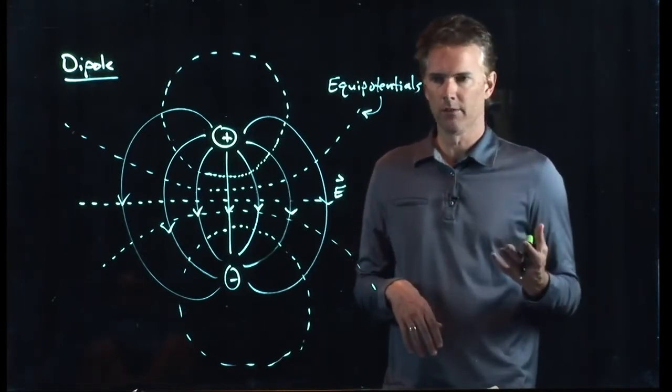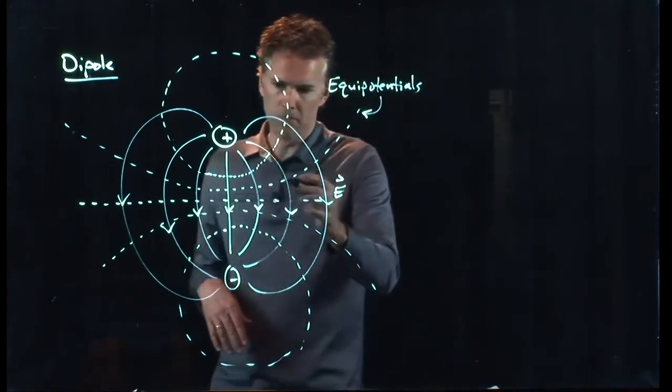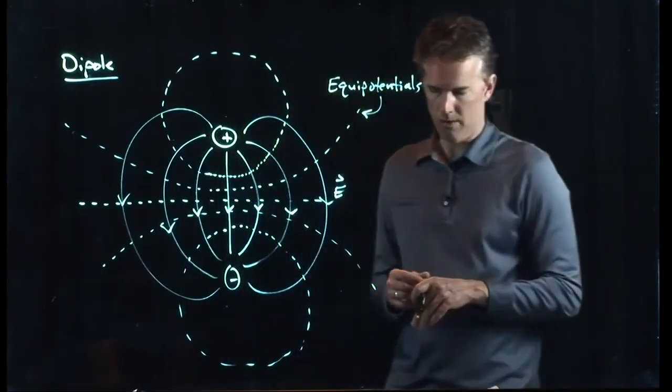...the cosine of 90 degrees is, of course, zero. So a charge can move along one of these lines without having any work done on it at all.